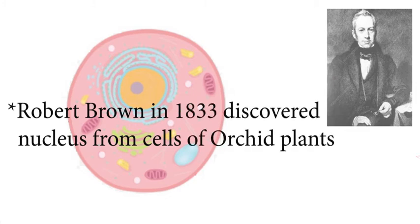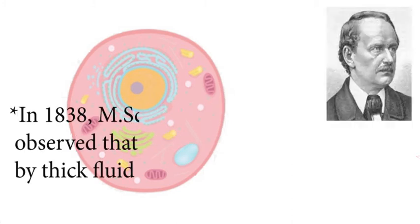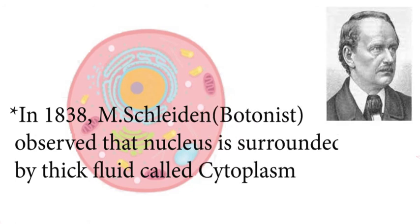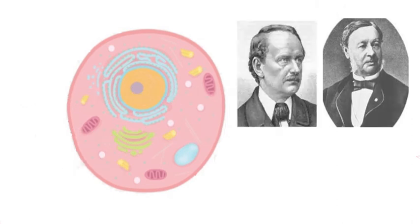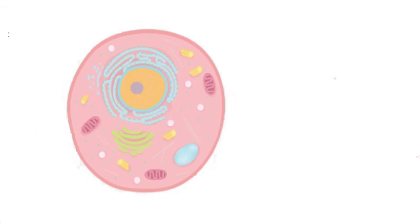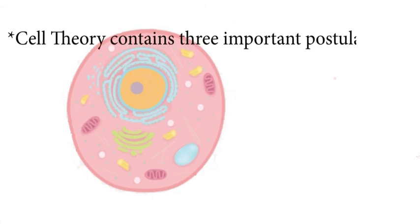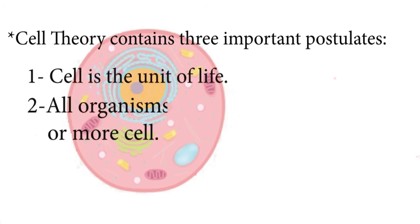By then, many scientists started their work on cell. Then in 1838, Matthias Schleiden, who was a botanist, observed that the nucleus is surrounded by thick fluid. Later, one of his teammates, Theodor Schwann, in 1839 proposed that all organisms are made up of cells. Schleiden and Schwann worked together and presented cell theory. Their cell theory contains three important postulates: cell is the unit of life, all organisms are made up of one or more cells, and cells are produced automatically.